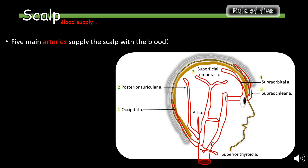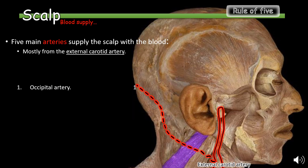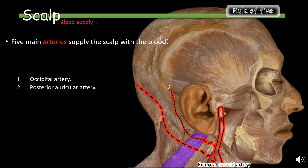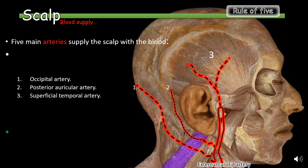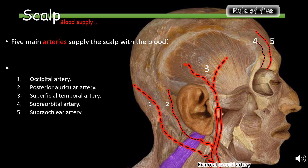Now we will discuss the blood supply to the scalp. There are five main arteries that supply the scalp, arising mostly from the external carotid artery. They include the occipital artery, the posterior auricular artery, the superficial temporal artery, the supraorbital artery, and the supratrochlear artery.